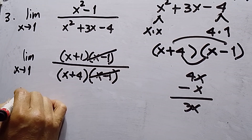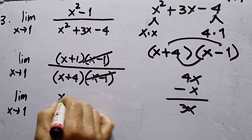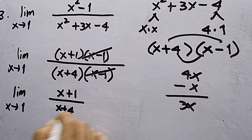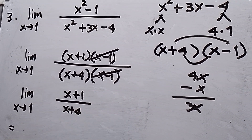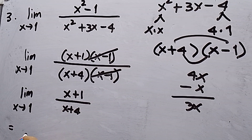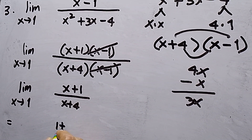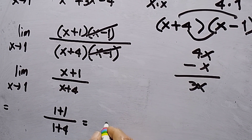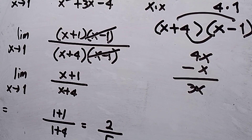Cross out (x minus 1) from numerator and denominator. Now we have limit x approaches 1 of (x plus 1) over (x plus 4). Substituting x equals 1: 1 plus 1 over 1 plus 4 equals 2 over 5. The answer for number three is 2 over 5.